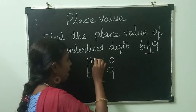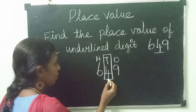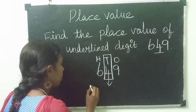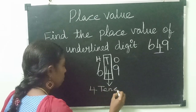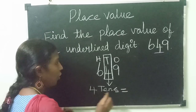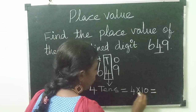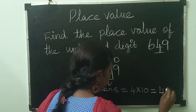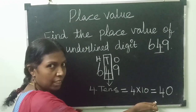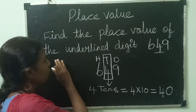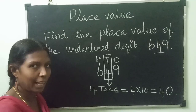We can see that 4 is in the tens position, so we have 4 tens. 4 tens are 40. So 40 is the answer — 40 is the place value of the underlined digit 4.